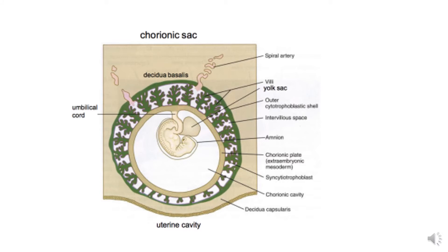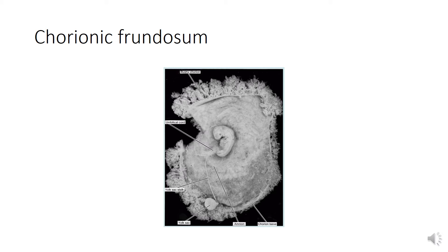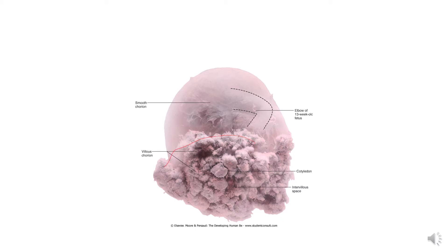The chorionic sac shows well-developed villi, with the chorionic frondosum structure more developed at the embryonic pole. The chorionic frondosum is the bushy chorion formed by the chorionic villi, while villi are less well developed at the abembryonic pole, where the area is known as chorion laeve — the smooth chorion.